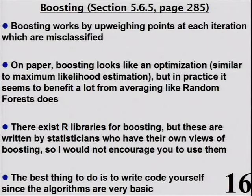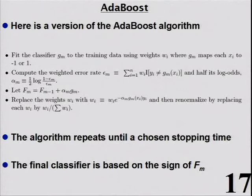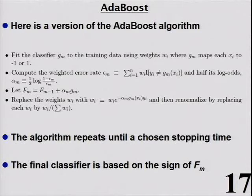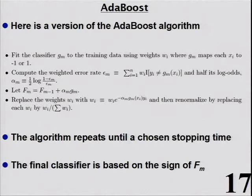Here's the AdaBoost code. You start with a classifier g that gives an estimate of the class — negative one or one — like a small four-node tree. You compute the weighted error rate e: the fraction of points it's getting wrong on the training data. Then alpha = (1/2) * log((1 - e) / e), which reflects how badly it's doing. If it does worse than 50%, alpha becomes negative and flips the sign.